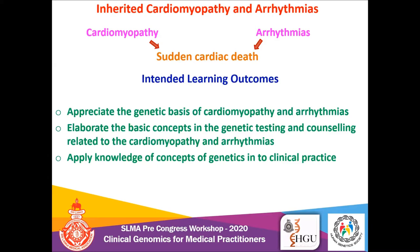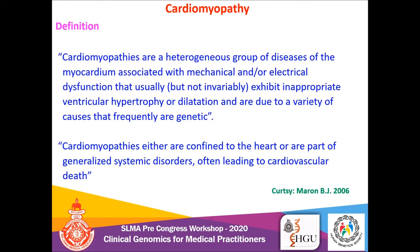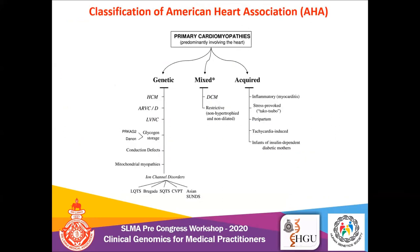The learning outcomes for this brief presentation are shown on this slide. Many systematic classifications and definitions have been proposed for cardiomyopathy since 1957. The definition proposed by the American Heart Association in 2006 was the first known definition to address genetics as a cause. Accordingly, primary cardiomyopathies were classified into three groups: genetic, mixed, and acquired.